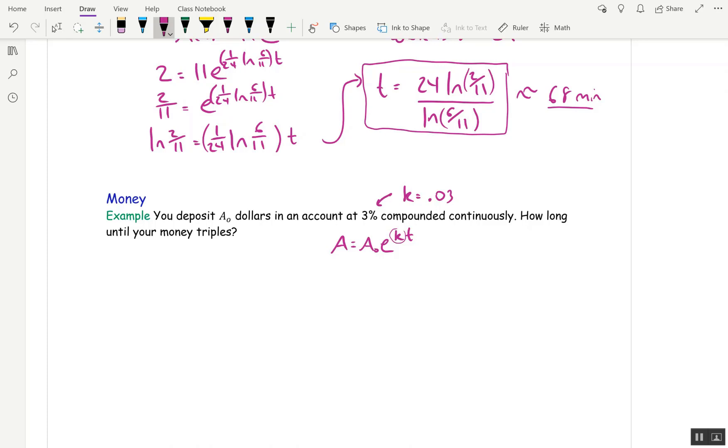So, you deposit A₀ dollars in an account at 3% compounded continuously. So that means this is the equation governing how much money is left. How long until your money triples? Now there's a formula in your book for doubling time and they, it's kind of gimmicky. They want you to memorize it. And I think that's silly because, I want to see that you know how to get that.